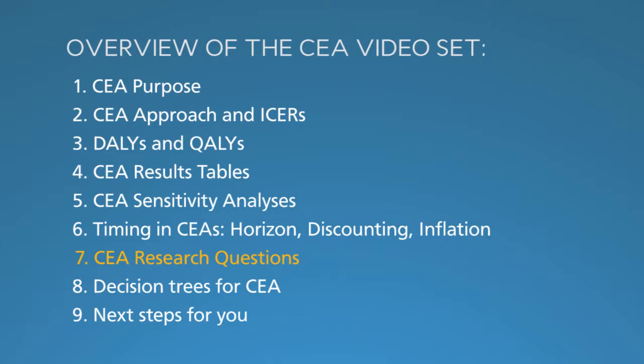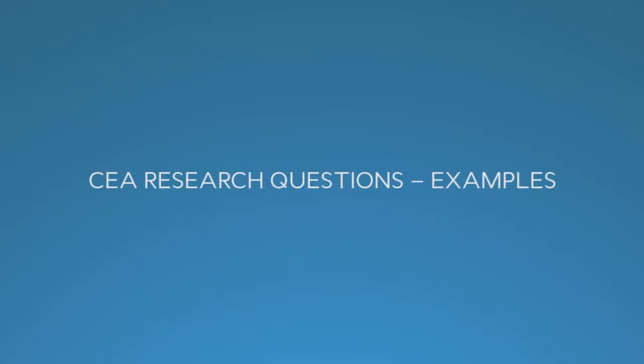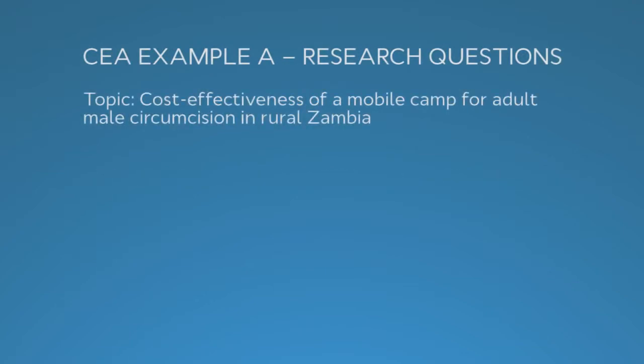In this segment we discuss how to organize a cost-effectiveness analysis for a research proposal. Specifically, we will show you research questions and basic methods, for which there are different terminologies used to present research plans. In this example we are using the research questions approach. The topic is the cost-effectiveness of a mobile camp for adult male circumcision in rural Zambia.